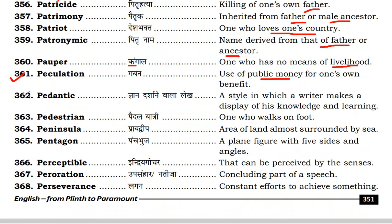Next is pedantic. Pedantic is a style in which you want to display some knowledge or learning — a writer who makes a display of his knowledge and learning. Next is pedestrian — one who walks on foot.